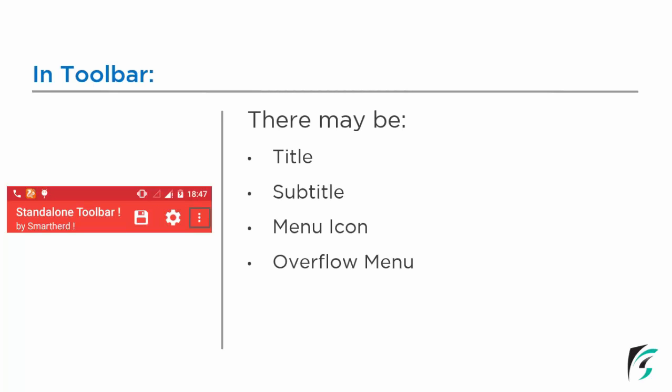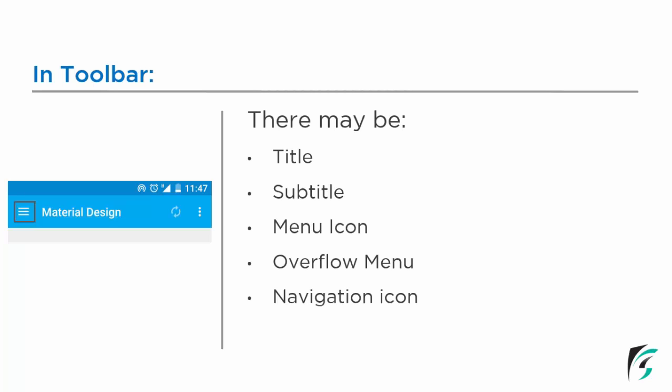There may be an overflow menu in the toolbar. The overflow menu contains a list of items which, when clicked, perform the actions as defined in the application. In the toolbar, there may also be a navigation icon. We can see in this image there is a navigation icon on the left side of the toolbar. This navigation icon may be a back button, a refresh button, or anything as you define. In this image, we can see there is only one menu icon — the refresh icon — and there is an overflow menu.